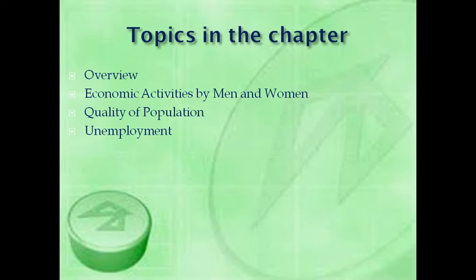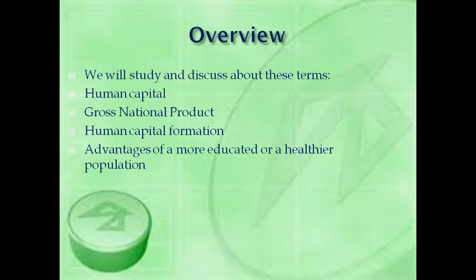In this chapter, the topics that we will cover are: overview, economic activities by men and women, quality of population, and unemployment. Let's get started with the topic overview. We will study and discuss about these terms: human capital, gross national product, human capital formation, and advantages of a more educated or healthier population.